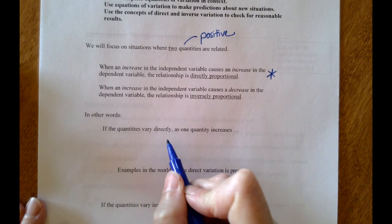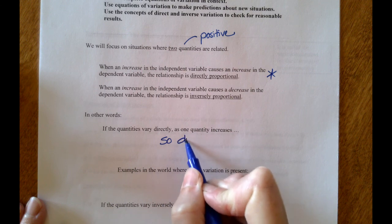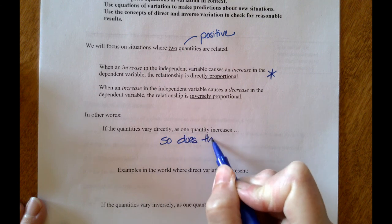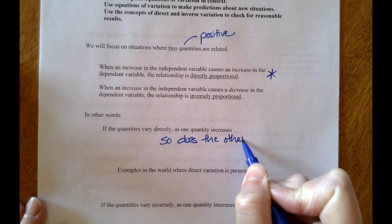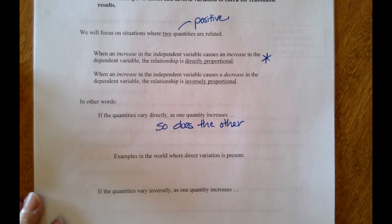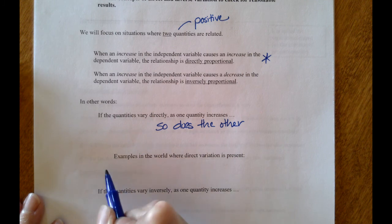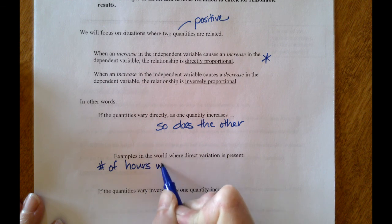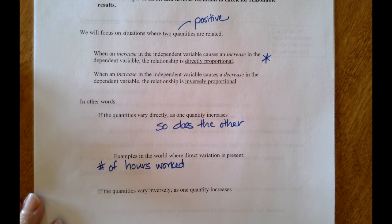In other words, for direct variation, if the quantities vary directly, as one quantity increases so does the other. Some examples out in the world where direct variation is present: if you are an hourly employee, the number of hours worked, as the number of hours worked increases, so does your take-home pay.